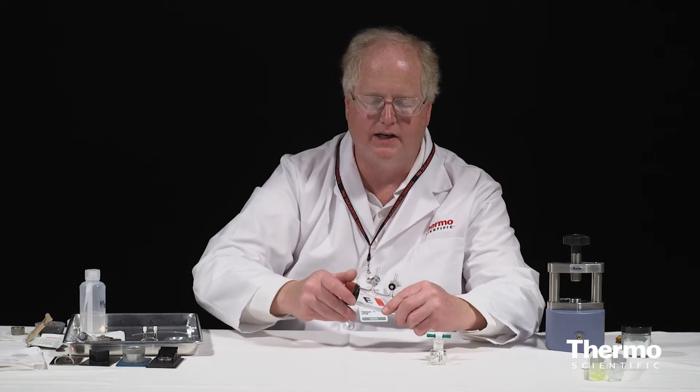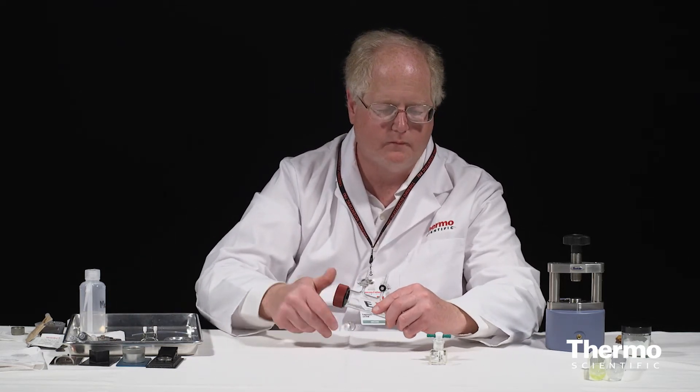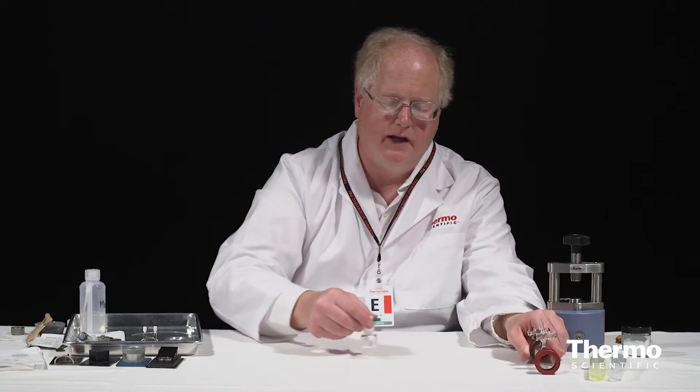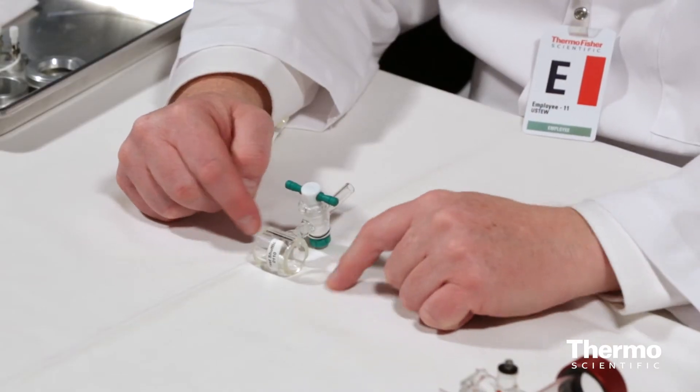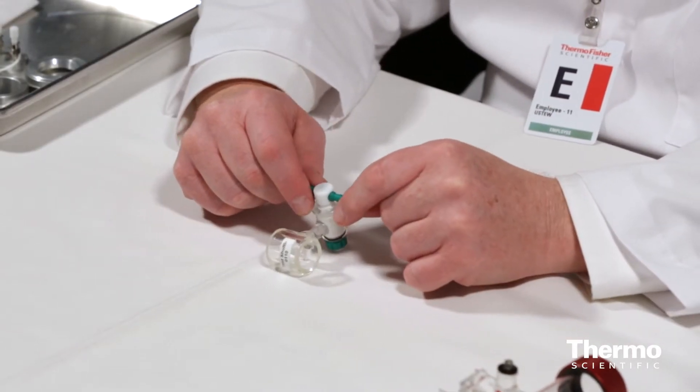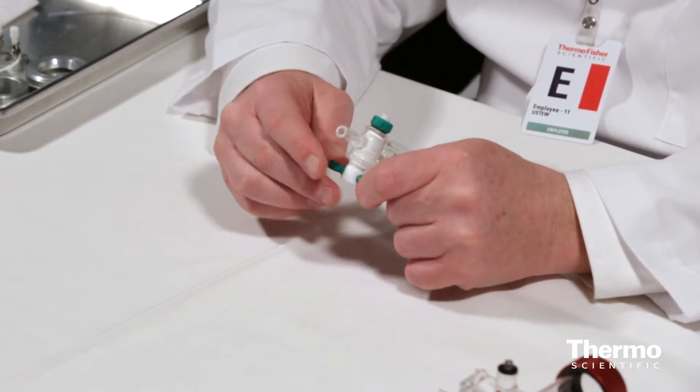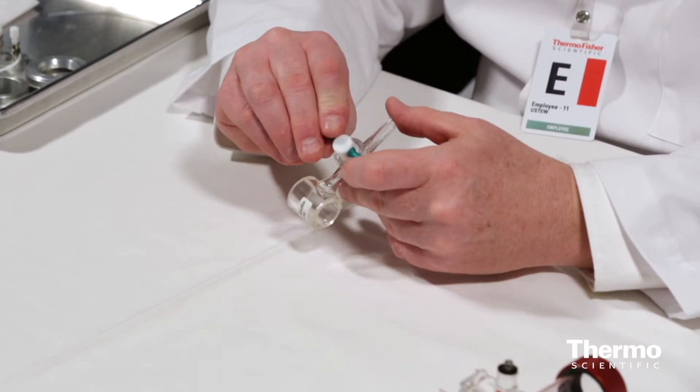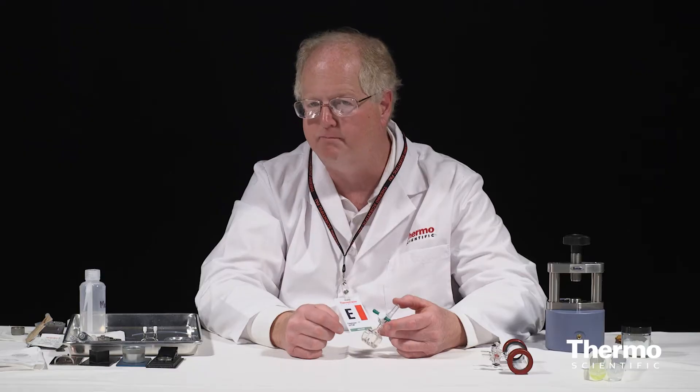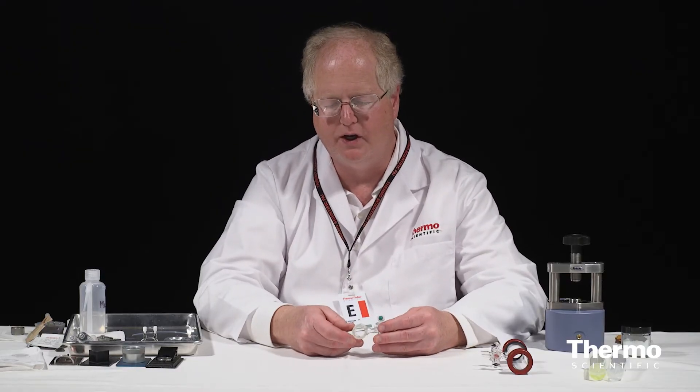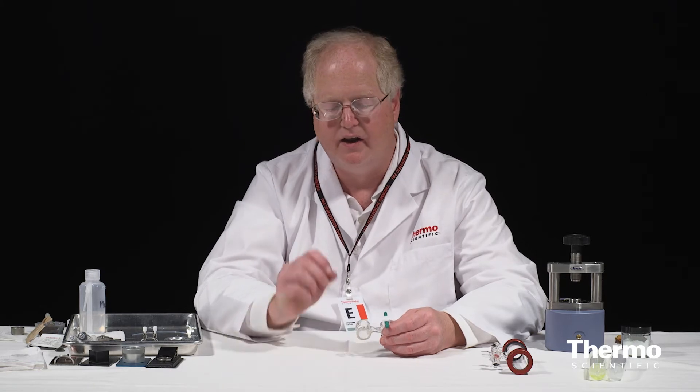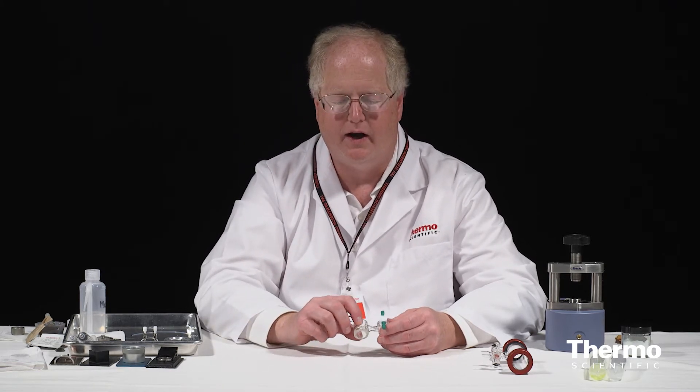We're not going to be using that cell. Instead, what we've got is a very simple cell in which the windows have been sealed on. They've actually been epoxied on. The overall path length of this cell is well known. And then this cell has been filled at our manufacturing facility with carbon monoxide, which we are going to use as a high resolution sample.